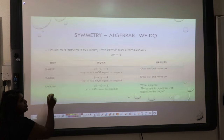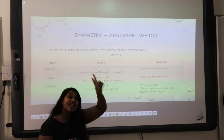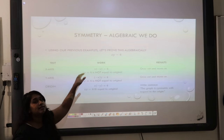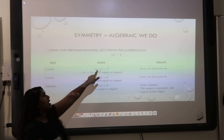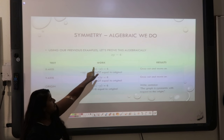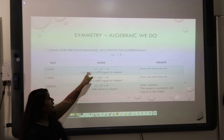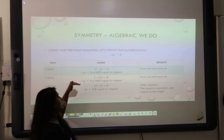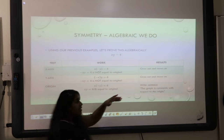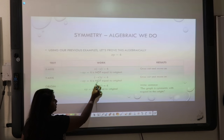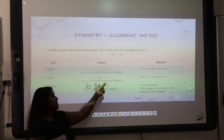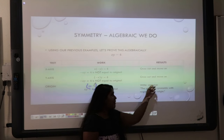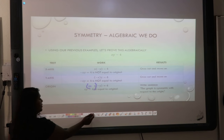Let's do one more. Our function xy equals 4 — that was the second graph we tested. We already know the answer is the origin, but let's test it algebraically. My x-axis test: I replace my y with negative y. A positive times a negative is going to give me a full negative — so negative xy does not match my function. Cross out and move on. My y-axis test: I change my x to a negative. Same thing — negative xy is not equal. Cross out and move on. Finally, the origin test: negative x times negative y would get me positive xy. Therefore, the graph is symmetric with respect to the origin.